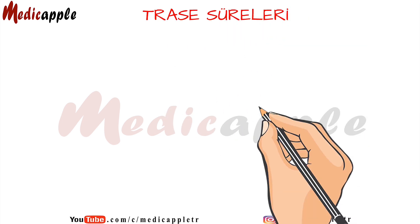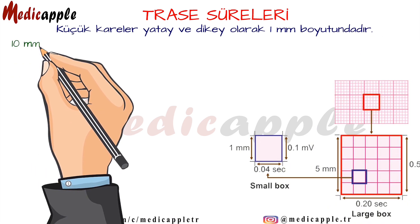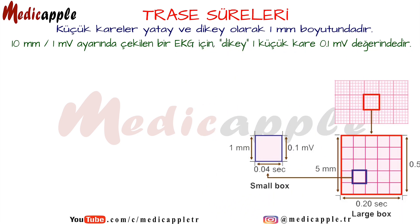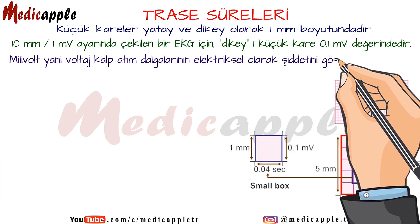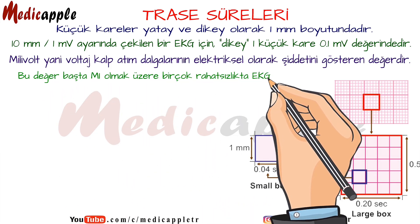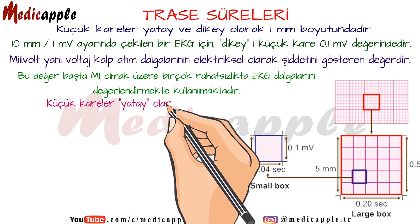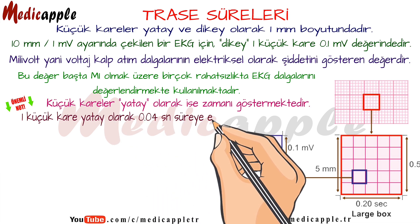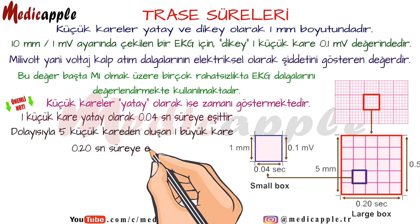Trace times. Small squares are one millimeter in size horizontally and vertically. For an ECG taken at 10 mm/1 mV, one small vertical square is worth 0.1 mV. Millivolt is the value that shows the electrical intensity of voltage pulse waves. The small squares show the time horizontally. One small square equals 0.04 seconds of time horizontally. Therefore, one large square consisting of five small squares is equal to 0.20 seconds.